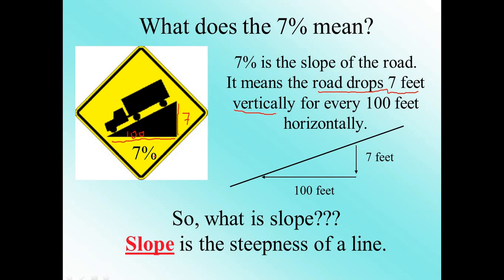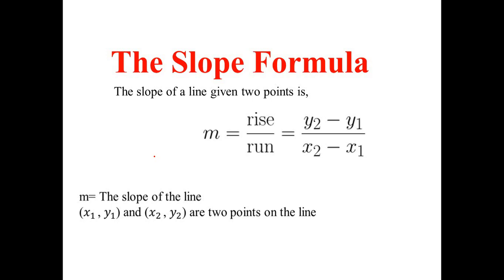To find the slope there are two ways. If you are given a graph or the line itself, you can find the slope using rise over run. There is also another way: if we have at least two clear points on the line, we use the slope formula. We will talk about each one in more detail. By the way, m is the symbol for slope, so we use m instead of writing the word slope each time.